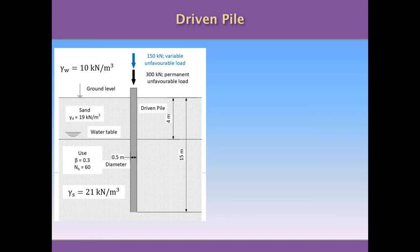The soil where the pile was driven is sand with two different layers, because the water table is at 4 meters from the ground level. The first layer, between the ground level and the water table, is dry sand with 19 kN/m³ unit weight. The second layer, from 4 meters to 15 meters (11 meters thick), is saturated sand with 21 kN/m³ unit weight. We also have a beta coefficient of 0.3 and an Nq coefficient equal to 60. The unit weight of water is taken as 10 kN/m³.